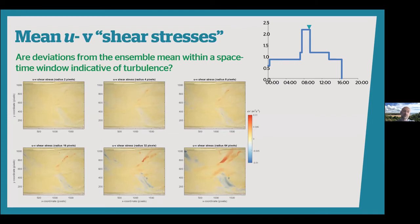Taking that a step further: by looking at spatial averages, can deviations from the ensemble mean within a space-time window be taken as indicative of turbulence? Here is an example looking at the UV deviation from the mean within each spatial window. The bluer areas are slower flows deflected towards the right bank, and the red areas are faster flows deflected towards the left bank. This may be another way to extract turbulence information where we otherwise wouldn't be able to.